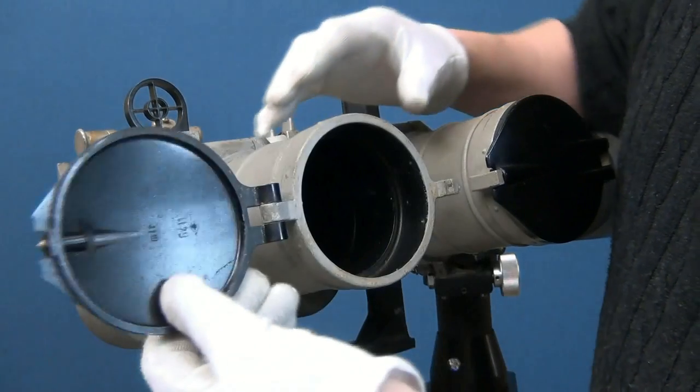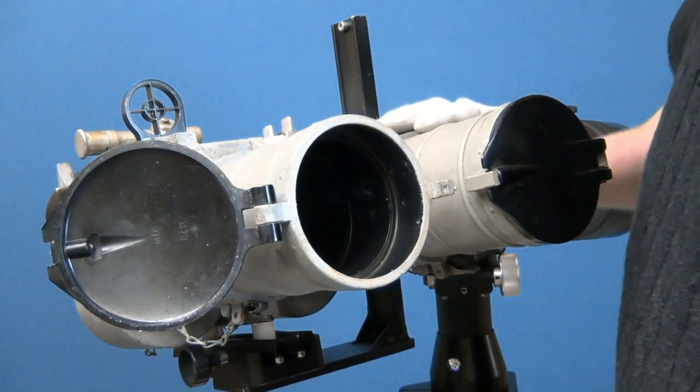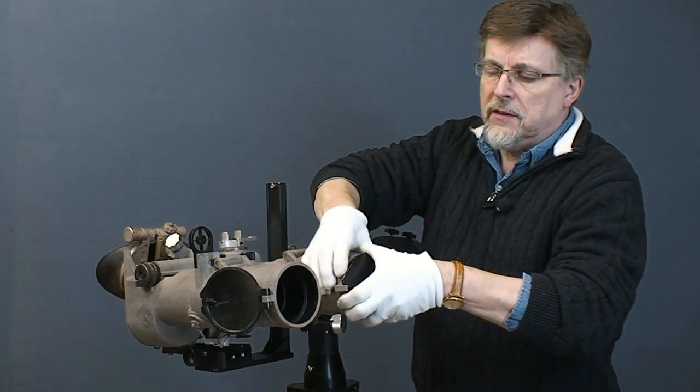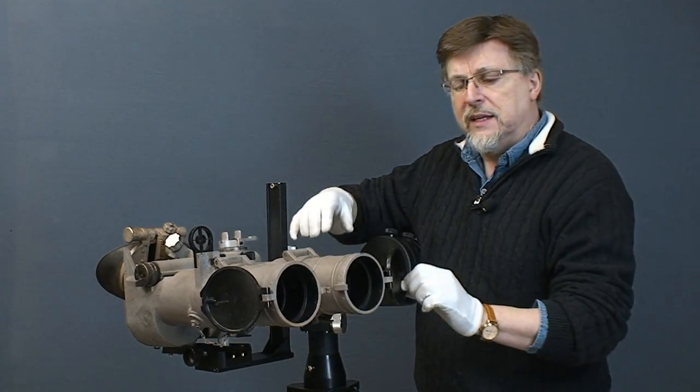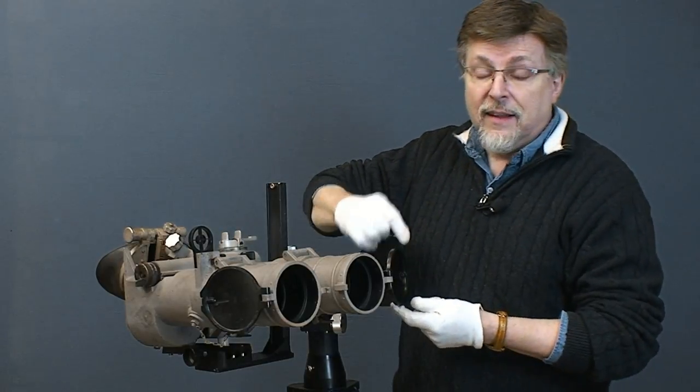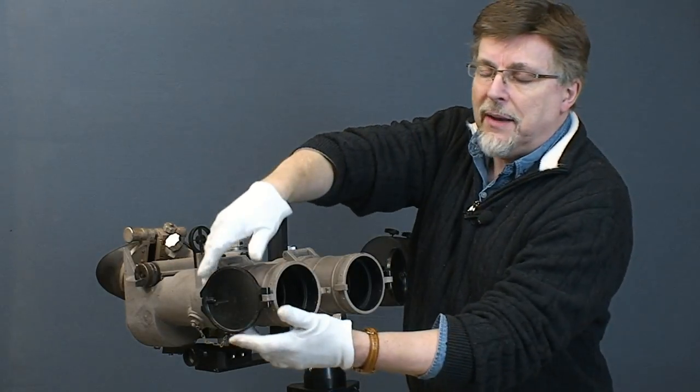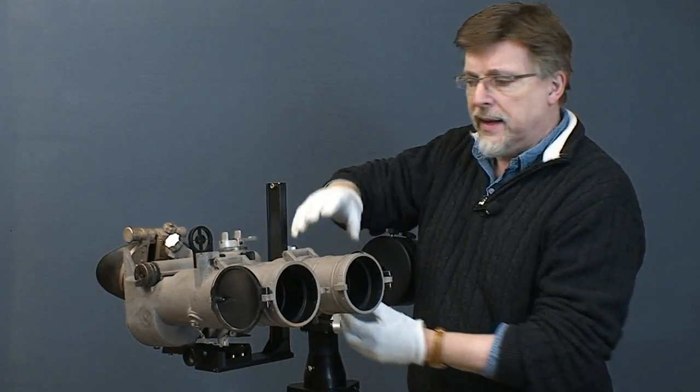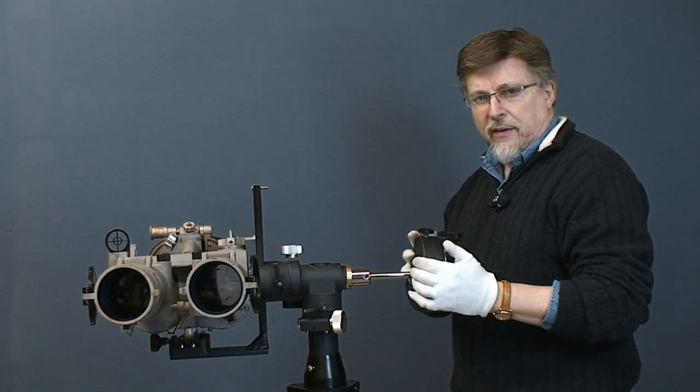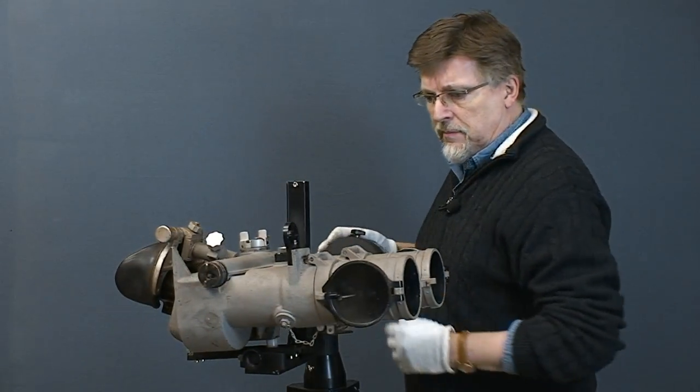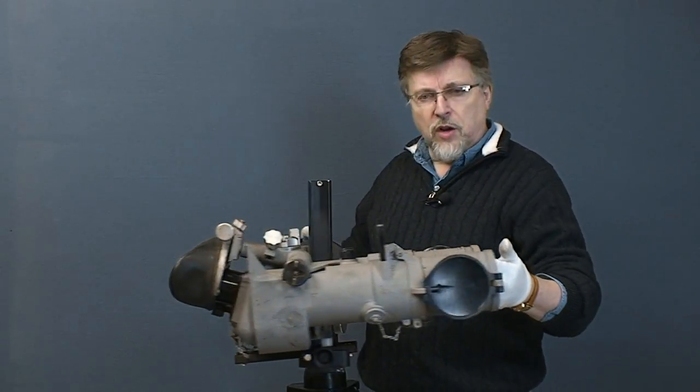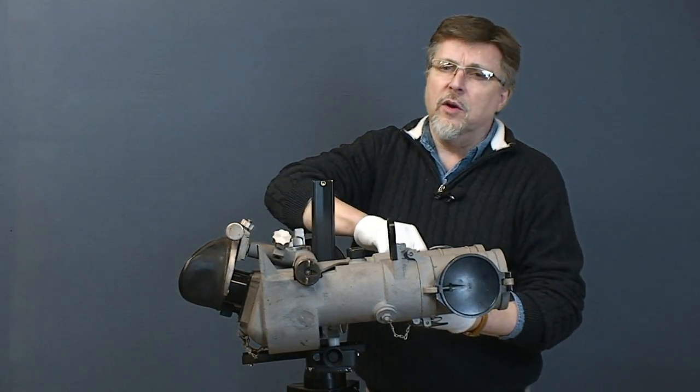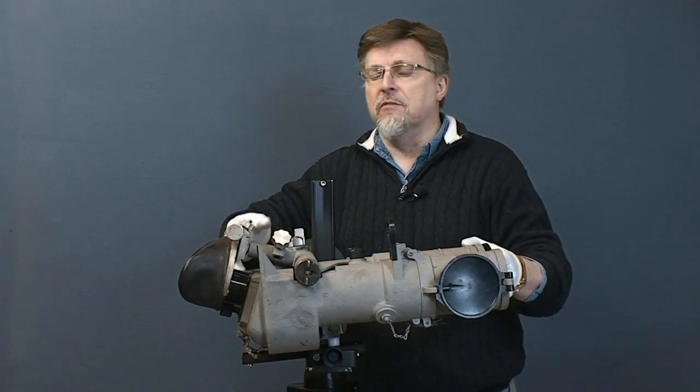And also we've got these rain guards that actually just fit at the front here. I'm being very careful with these because they're actually made of bakelite. Later on they actually put aluminum versions of this on there and they clip back out of the way like that. So this is more characteristic of the look of the binocular when it's in a more original condition.